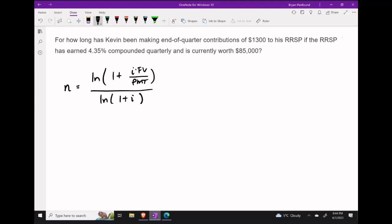Here we're going to take $85,000 as the future value. That's because Kevin has been making these contributions over a certain amount of time. So the following formula should apply since we do have an ordinary simple annuity.